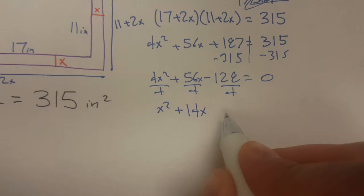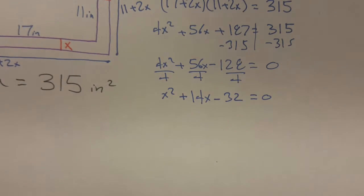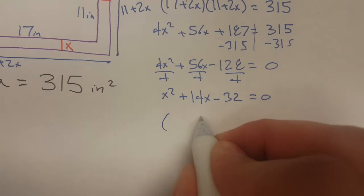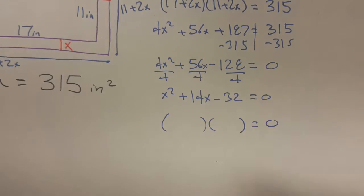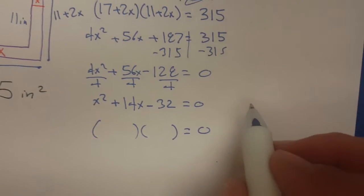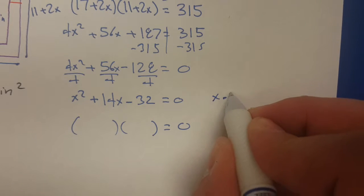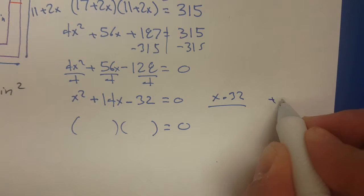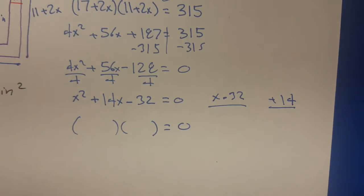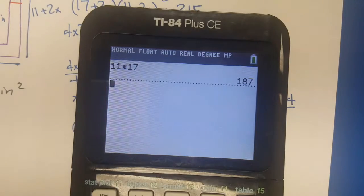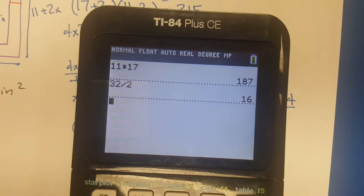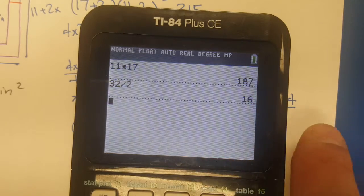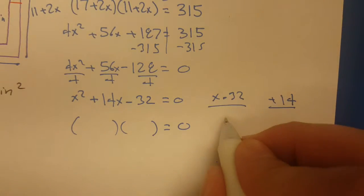Rewrite. I'm going to have x squared plus 14x minus 32 equaling zero. Now I can factor it into two binomials. I got to find the numbers that multiply to negative 32 and then add to 14. As they're breaking down 32, let's see, 32 divided by 2 is 16.